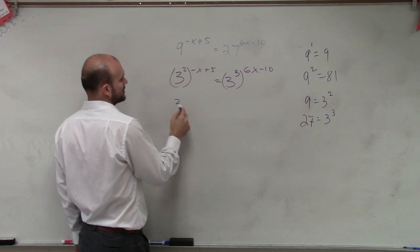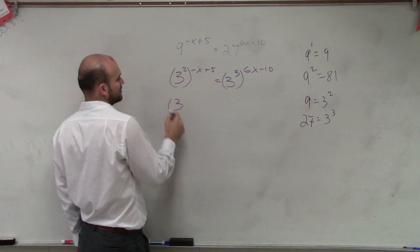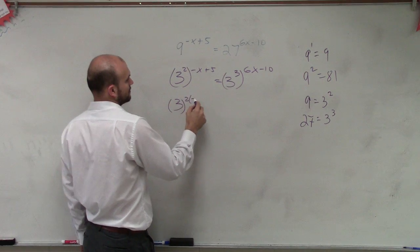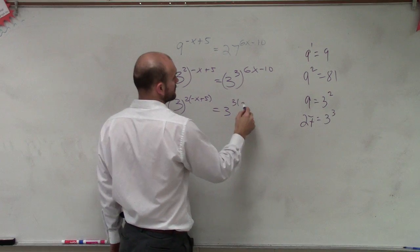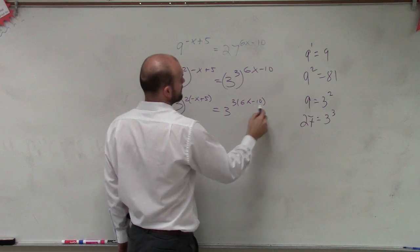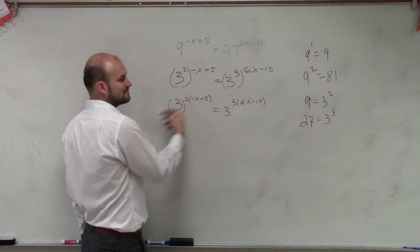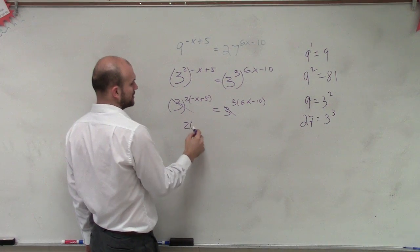Then we apply distributive property, because remember, we multiply them when we raise an exponent to an exponent. This is number 5. Now, since my bases are equal to each other, we know my exponents are equal to each other.